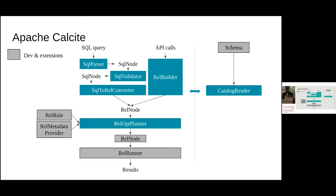All these APIs are provided by Calcite, and most often what we need to change to make it work for any underlying engine like Lucene is to introduce some custom rules, possibly some custom physical operators, and provide a way for Calcite to know what the tables and schema are — so how it can verify that a query is correct.